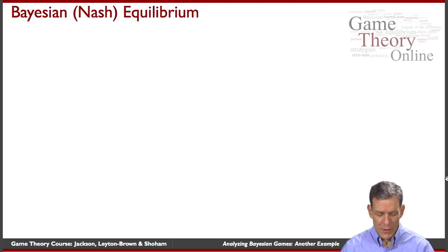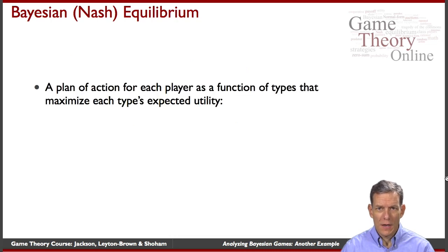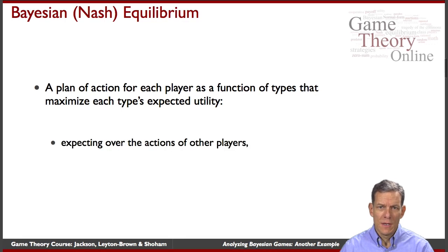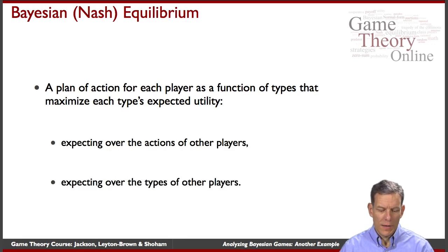Okay, Bayesian Nash Equilibrium, what did it do? Again, it has a plan of action for every player, so we have what they're going to do as a function of their information, their types, and it's maximizing your expected utility, expecting over what they think other players are going to be doing, and expecting over the types of other players which might affect their payoff.